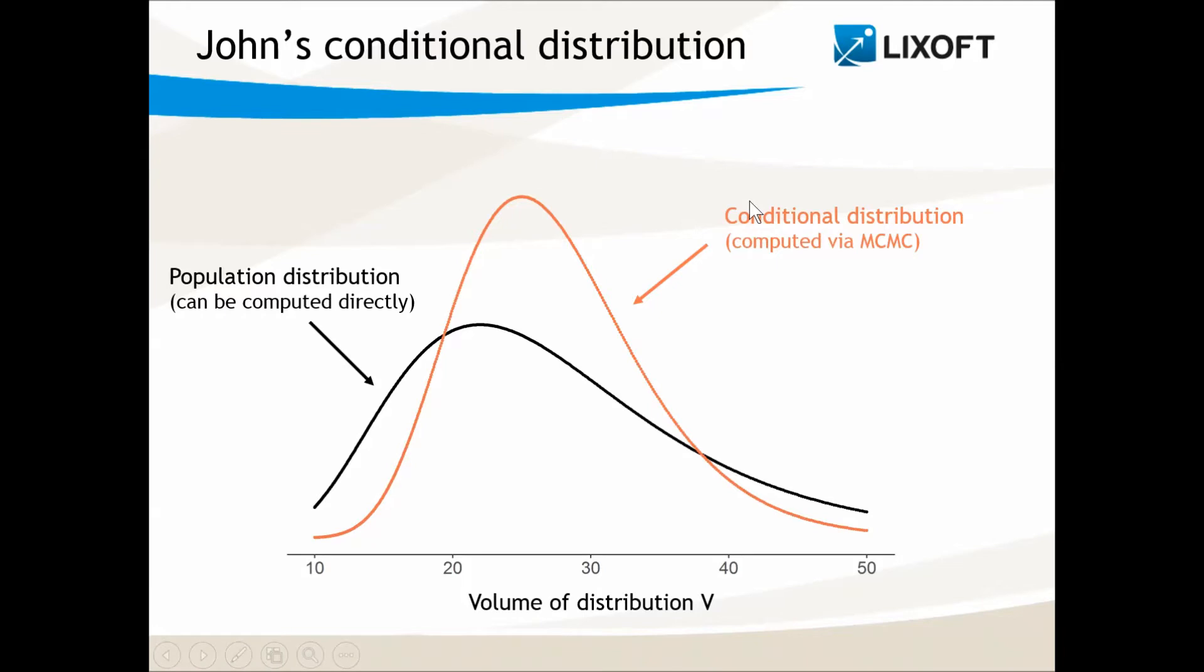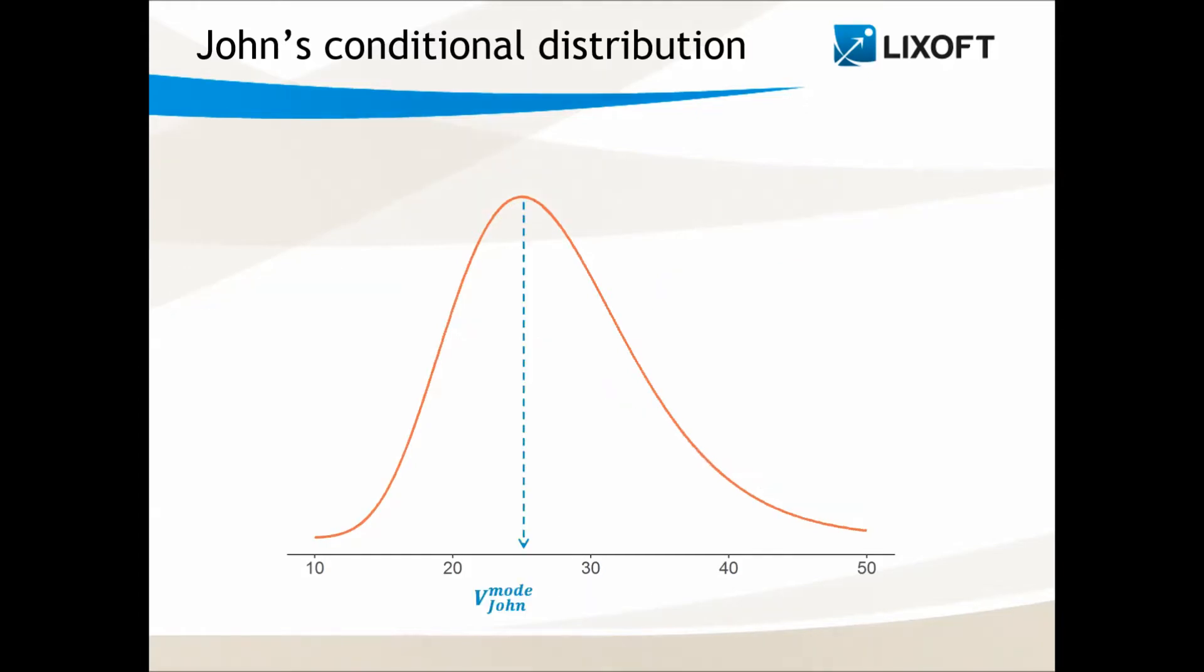Working with a distribution is not so easy, so one usually tries to find a value that summarizes the distribution. It can be the mode, for instance, or the mean. The mode is often used because it represents the most likely value, so the value that has the highest probability. The mode is also called maximum a posteriori, or EBE for empirical bias estimates.